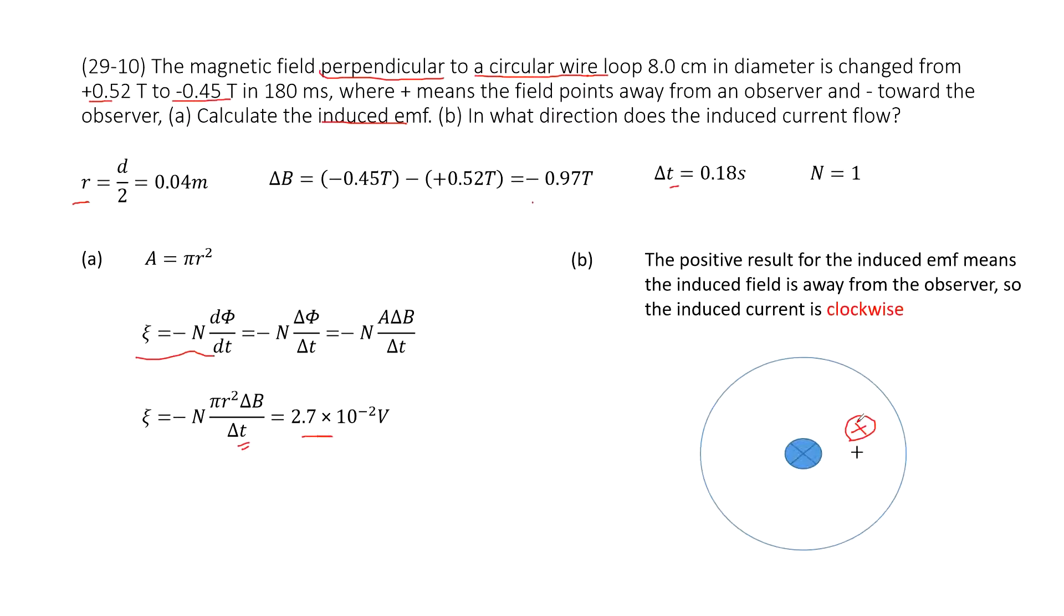So now we use the right hand rule, the thumb pointing inward. And then we can see, rotate your forefinger. Your forefinger will rotate in the clockwise direction. Thank you.